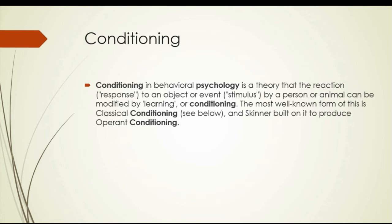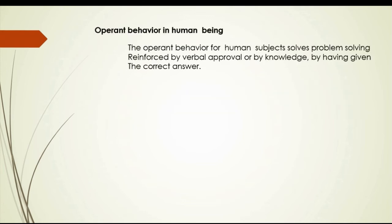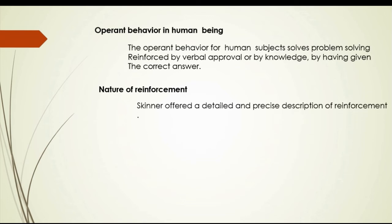Operant behavior in a human being involves problem solving, reinforced by verbal approval or by acknowledgment of having given the correct answer. Skinner offered a detailed description of reinforcement, studying two types: interval and ratio reinforcement. In interval reinforcement, reinforcements were given at more or less fixed intervals a definite number of times. The results of interval reinforcement were stable and constant, and highly resistant to extinction.